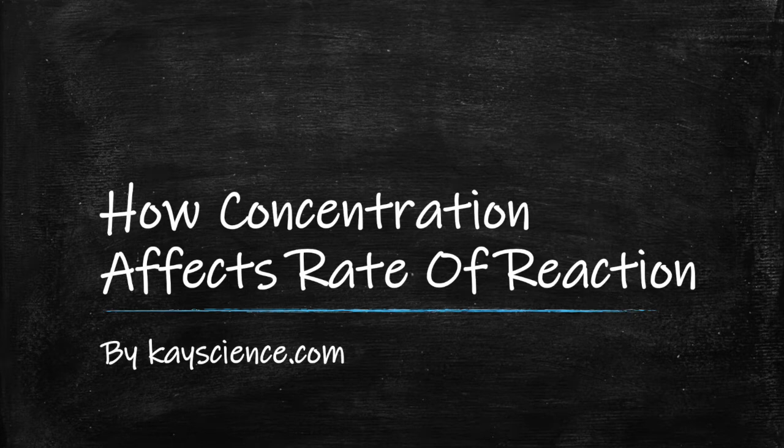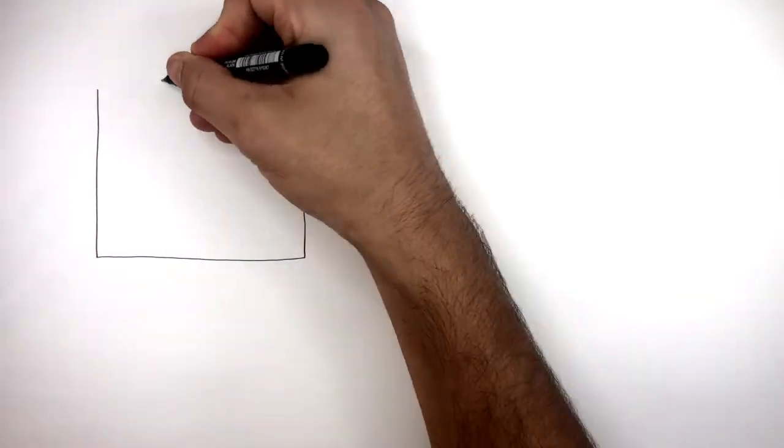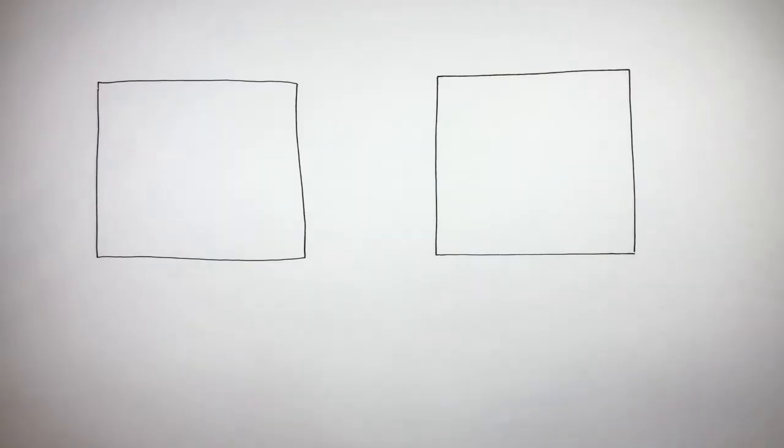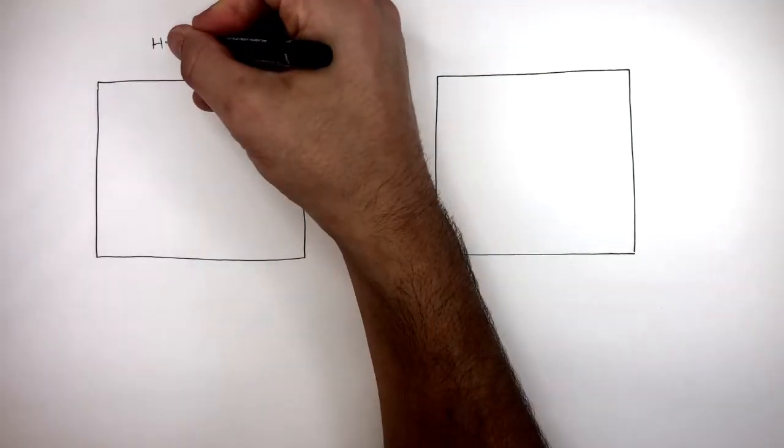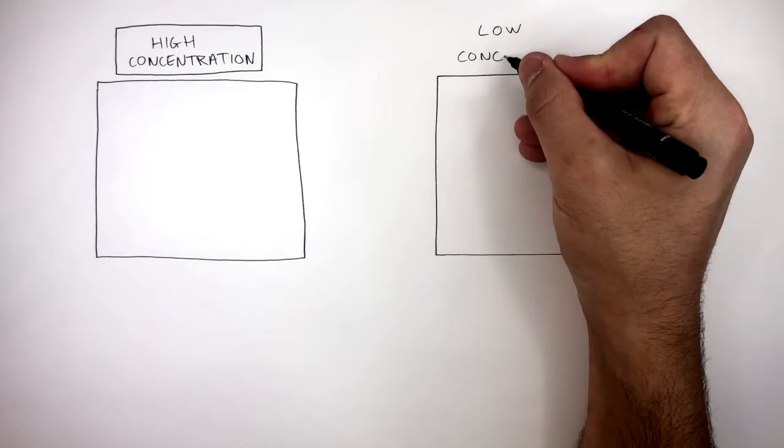How Concentration Affects Rate of Reaction by kscience.com. Here we have two containers, where the container on the left is the high concentration and the container on the right is the low concentration.